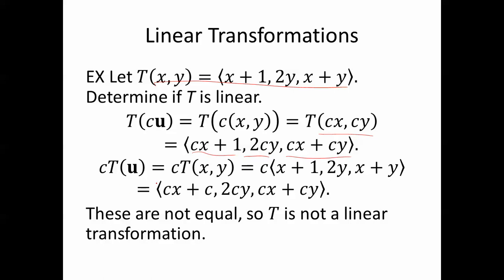c times T(u), well, you just take this and you multiply it by c. So we end up with that, which gives us [cx+c, 2cy, cx+cy]. Notice that these are not the same. These are not equal, so T is not a linear transformation.